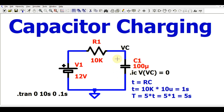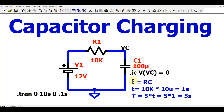You can see here this is a very simple circuit which has a voltage source V1, a resistor R1, and a capacitor C1. The value for V1 is 12 volts, the value for R1 is 10k ohms, and the value for C1 is 100 microfarads.